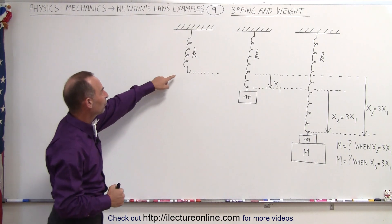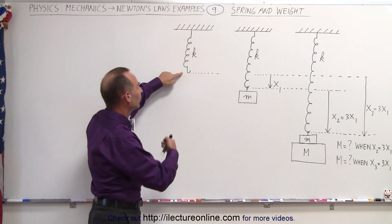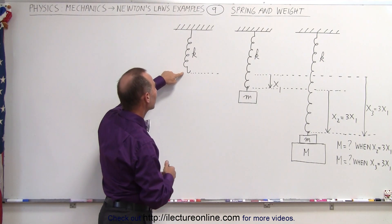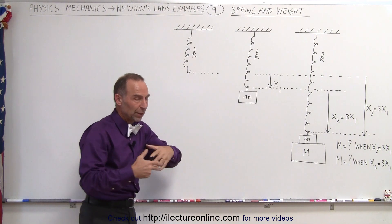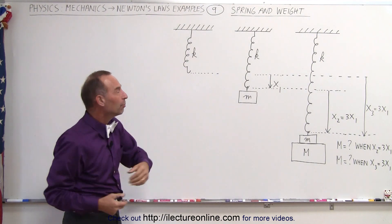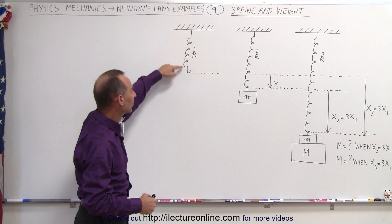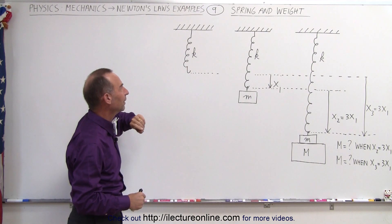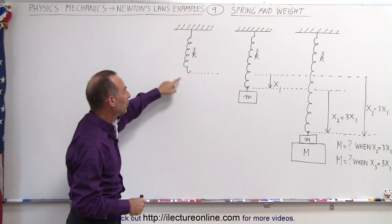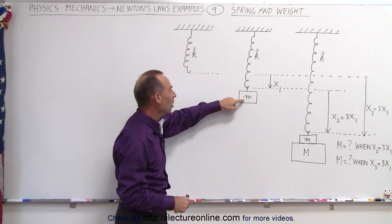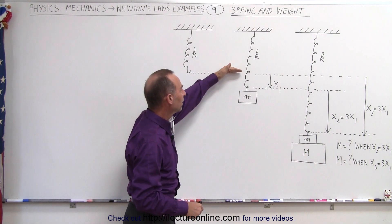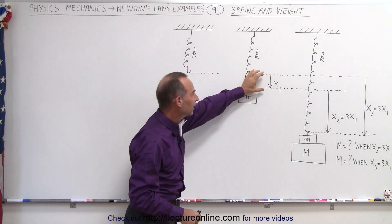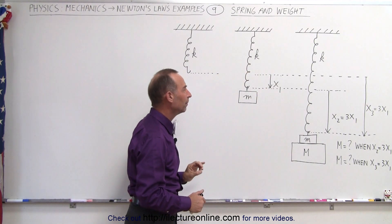Here we have a spring that's simply resting under its own mass, and let's assume we can ignore its own mass so that it extends to a certain distance right here. Then when we attach a small mass to it, it'll cause the spring to elongate a distance x1.